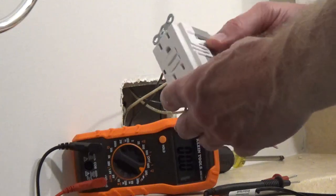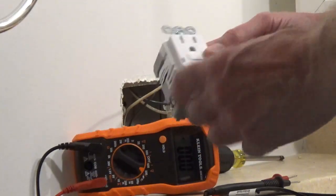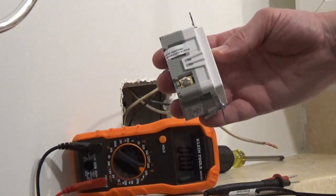The side with the narrow slot or the brass screw is the hot side. The longer slot or the silver screw is the neutral side.